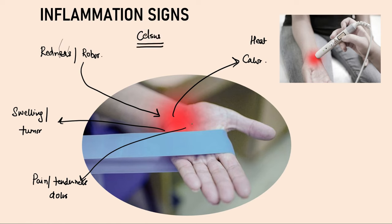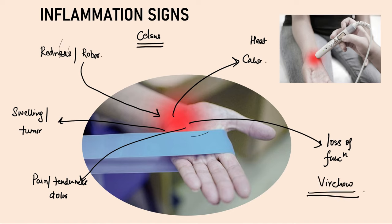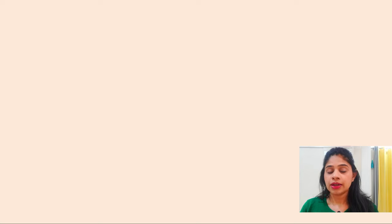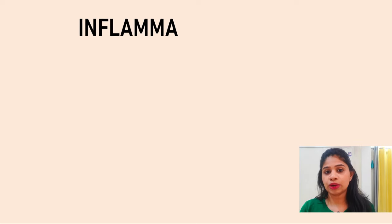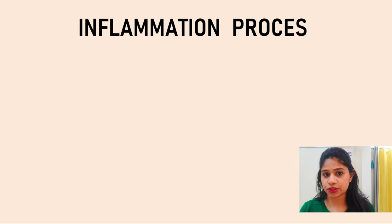The fifth sign — loss of function — was added by Virchow. So remember the five signs: redness, swelling, pain, heat, and loss of function. Now let's understand the most important aspect, which is the inflammatory steps, or the inflammatory process.